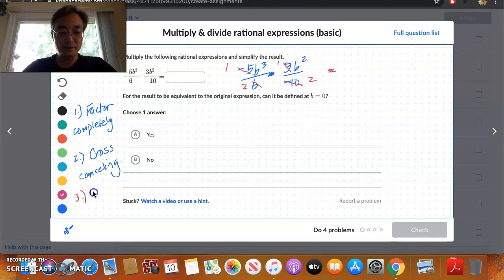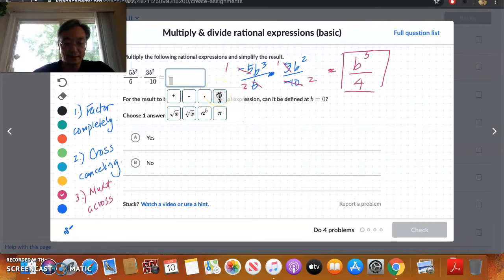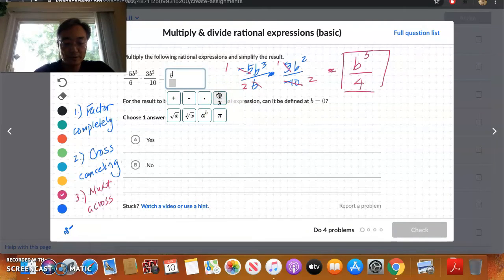And then the rest is just multiplying across. Okay, that's our step 3. So we have what here? b cubed times b squared. Again, when you're multiplying powers that have the same base, add the exponents. So it's 3 plus 2 is 5. And then 2 times 2 is 4. And here is our simplified expression. So let's type that in. We have b to the fifth over 4.